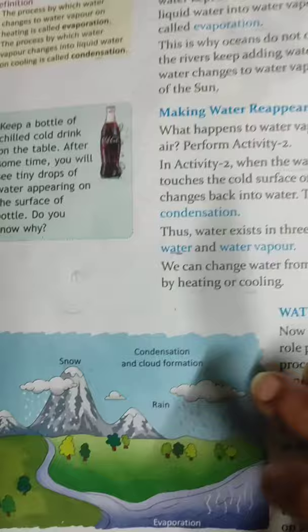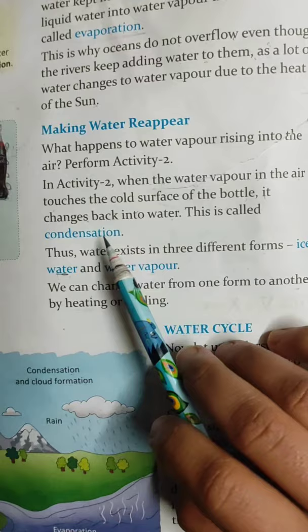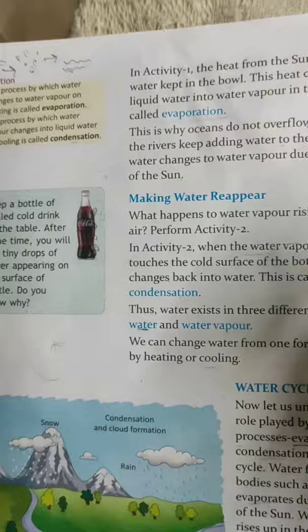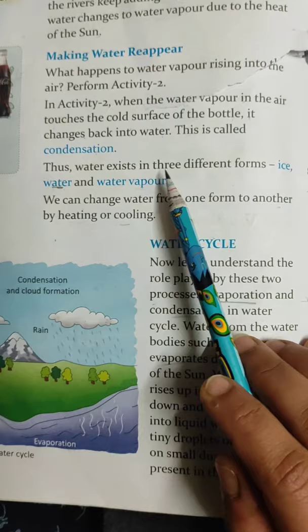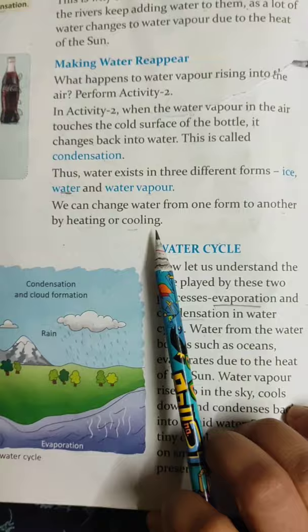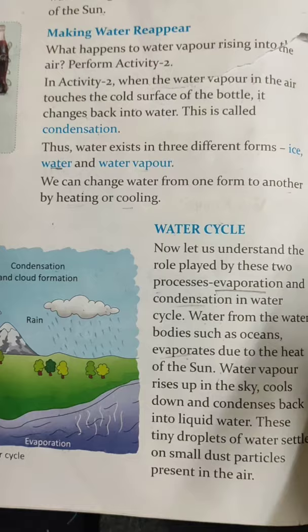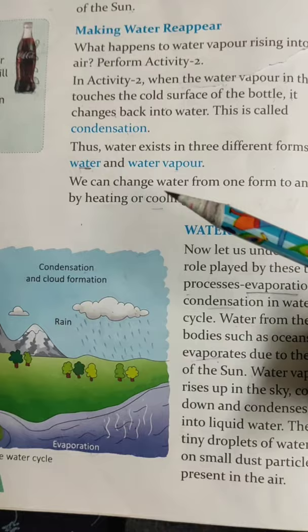In activity 2, when the water vapors in the air touch the cold surface of the bottle, they change back into water — this is called condensation. Condensation means water vapors are getting converted back into water. Thus water exists in three different forms: ice, water, and water vapors. We can change water from one form to another by heating or cooling. Paani ko garam karke hum ice se water bana sakte hain aur us water ke vapors bana sakte hain, aur water vapors ko thanda karke unhe vapis water aur ice mein convert kar sakte hain.